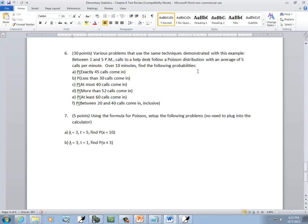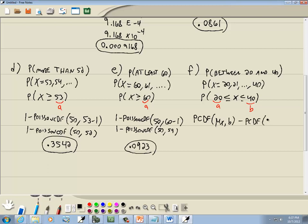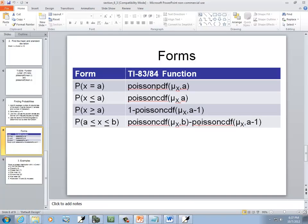And F. Probability between 20 and 40 calls come in, inclusive. So probability between 20 and 40, inclusive. If we write down x values, that means 20, 21. Inclusive means it includes 20 and 40 to 40. Inequality wise, this would be 20 is less than or equal to x is less than or equal to 40. So we have our formula. This is our A and this is our B. Our formula, Poisson CDF, mu sub x, comma, b, minus Poisson CDF, mu sub x, and then A minus 1. That's our fourth form here.